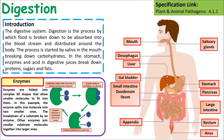Throughout the digestive system we have enzymes working to break down different molecules. One way to consider this is the lock and key model — each enzyme will only bind to a specific molecule. When the active site of an enzyme binds to a molecule, it holds it in place allowing the molecule to be broken up and released. The enzyme can then go on to catalyse another reaction.